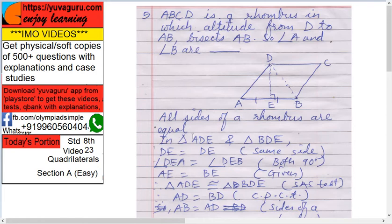So all sides of rhombus are equal. Now in triangle ADE and triangle BDE, what is the case? DE equals DE, same side.